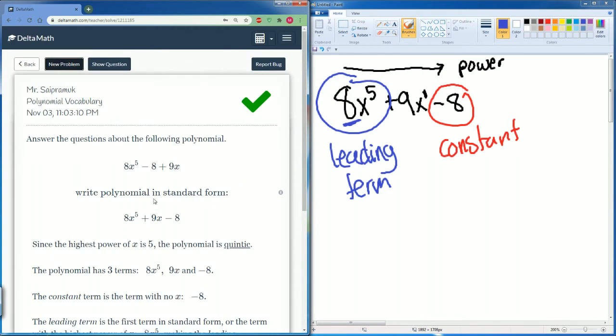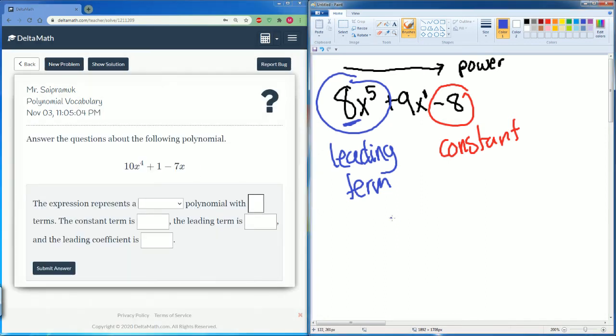Let's see, we got it correct. Yep, that is correct. Since the highest power is 5, the polynomial is called quintic.